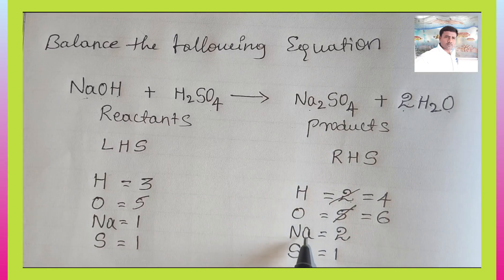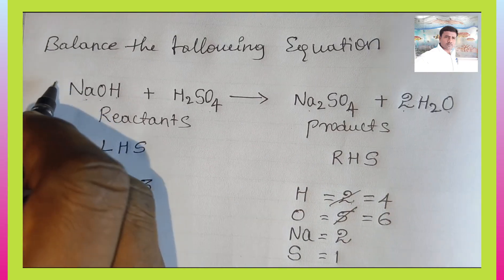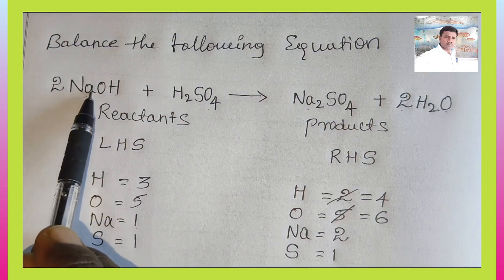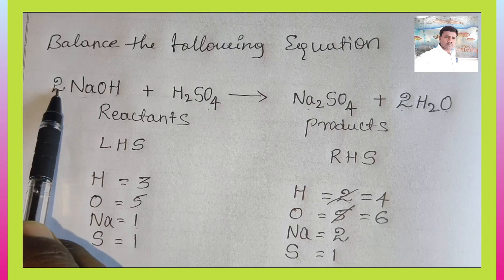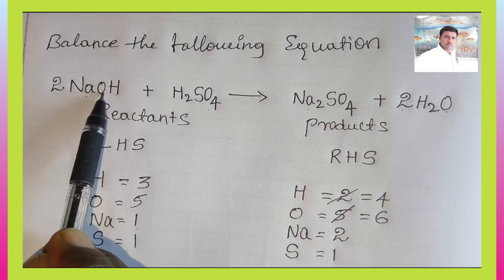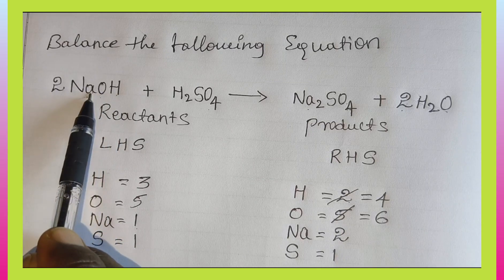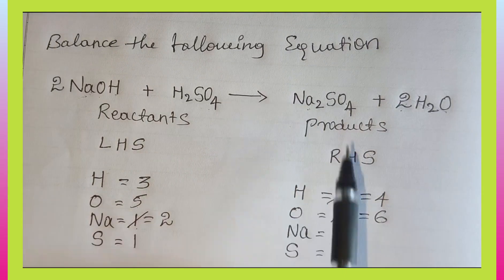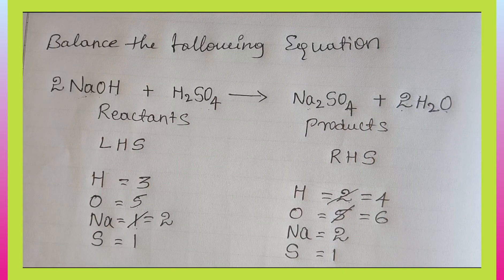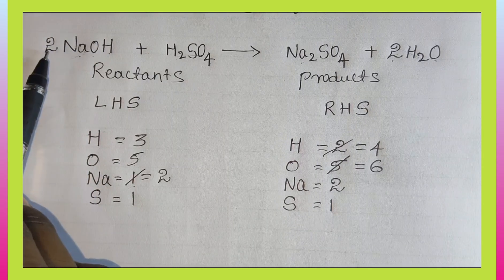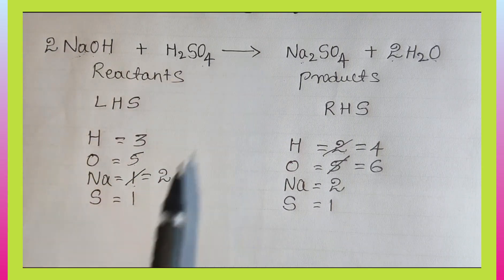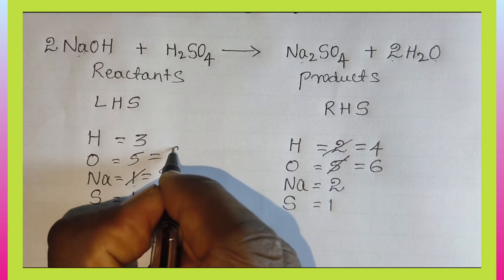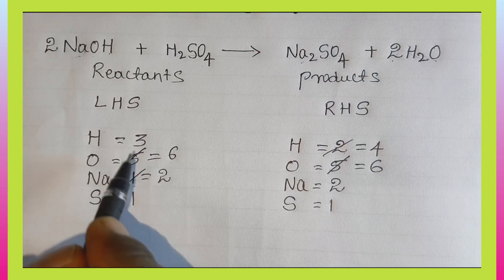There are 2 sodium atoms on the RHS and 1 on the LHS. Place stoichiometric coefficient 2 in front of NaOH. Multiply: 1 sodium into 2 gives 2 sodium atoms — now balanced. Each NaOH has 1 oxygen and 1 hydrogen. For oxygen on LHS: 2 (from 2×NaOH) plus 4 (from H2SO4) equals 6 oxygen atoms. Strike out the old count of 5 — new LHS oxygen count is 6.